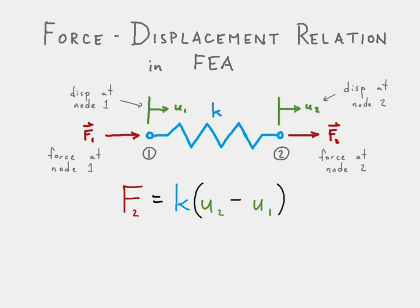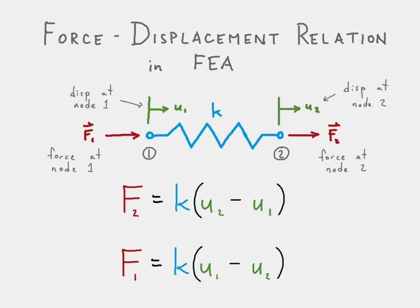All I did was say the force at node two is going to be equal to the stiffness of that spring multiplied by the difference in displacements between nodes two and one. Similarly, I can say that the force at node one is equal to the spring stiffness multiplied by the difference in displacements between node one and node two.